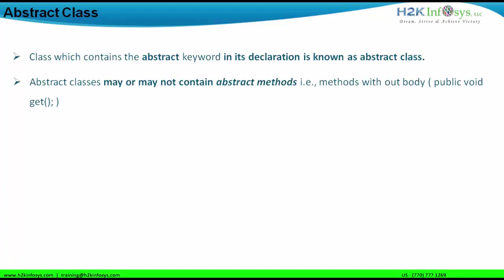For example, a public void method called 'get' does not have a body part. The body part would normally be within curly braces, but instead of curly braces, we see a semicolon. This is how you terminate an abstract method.